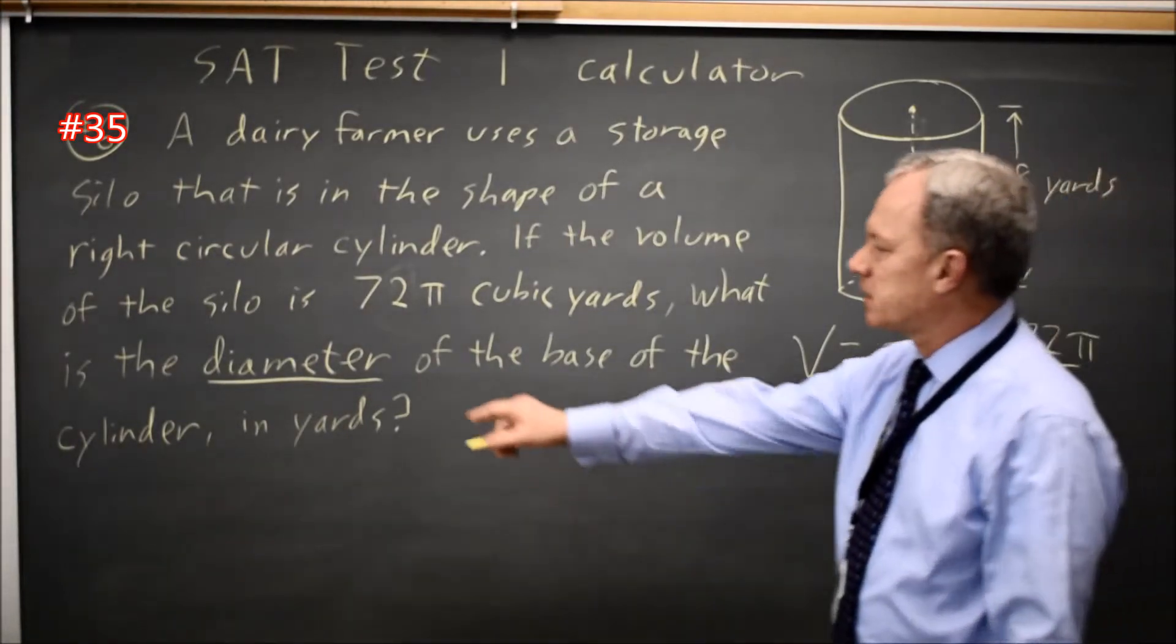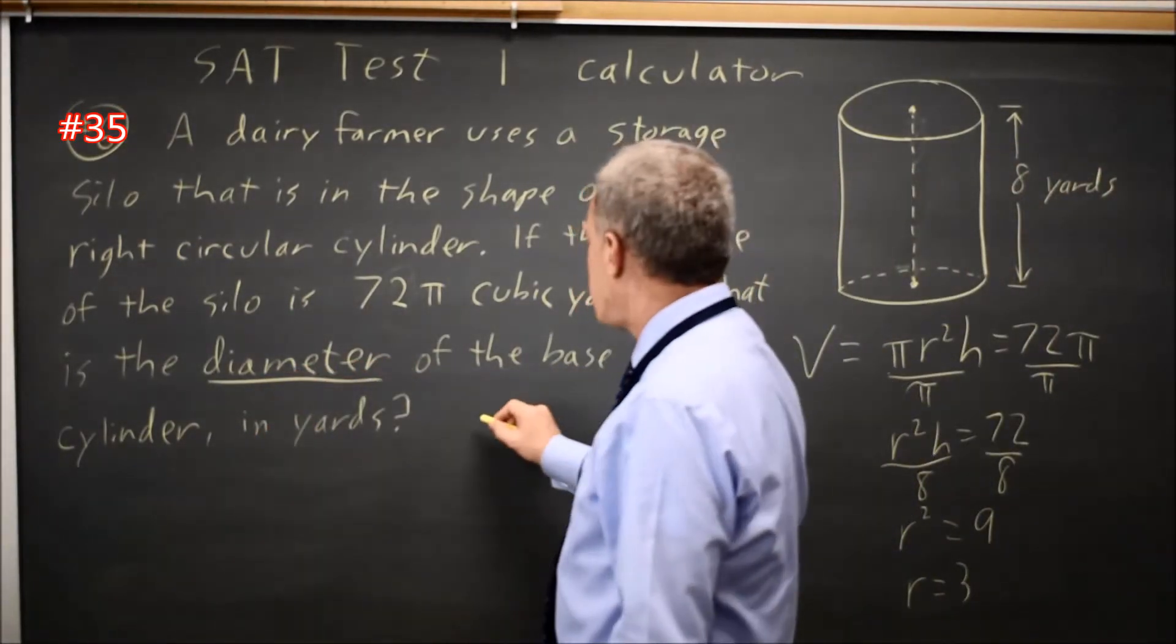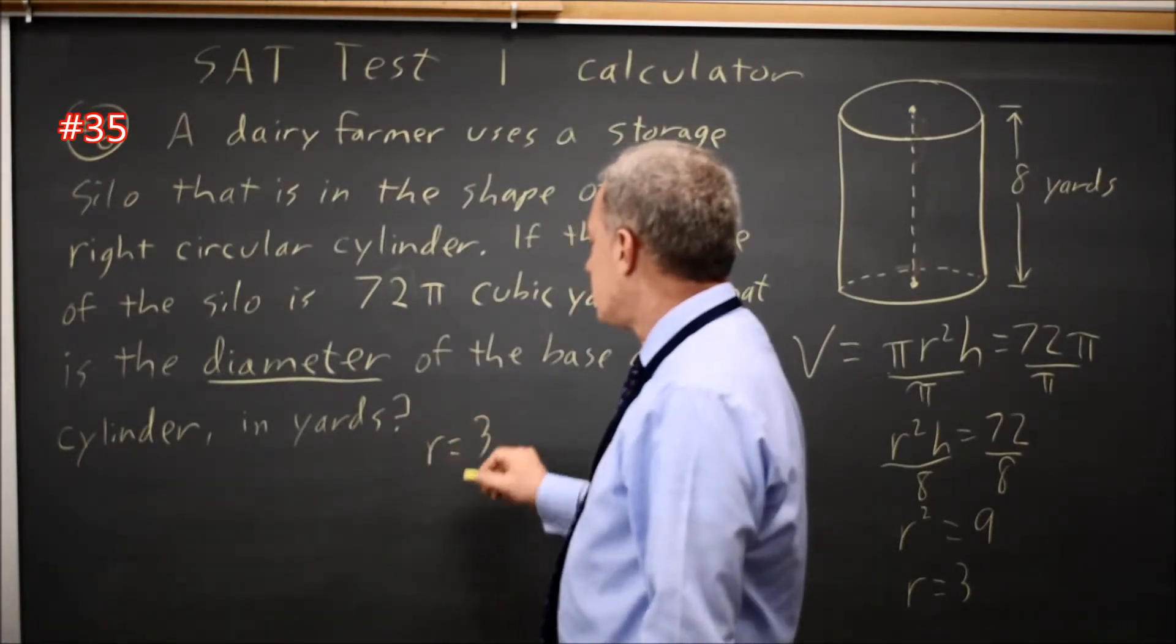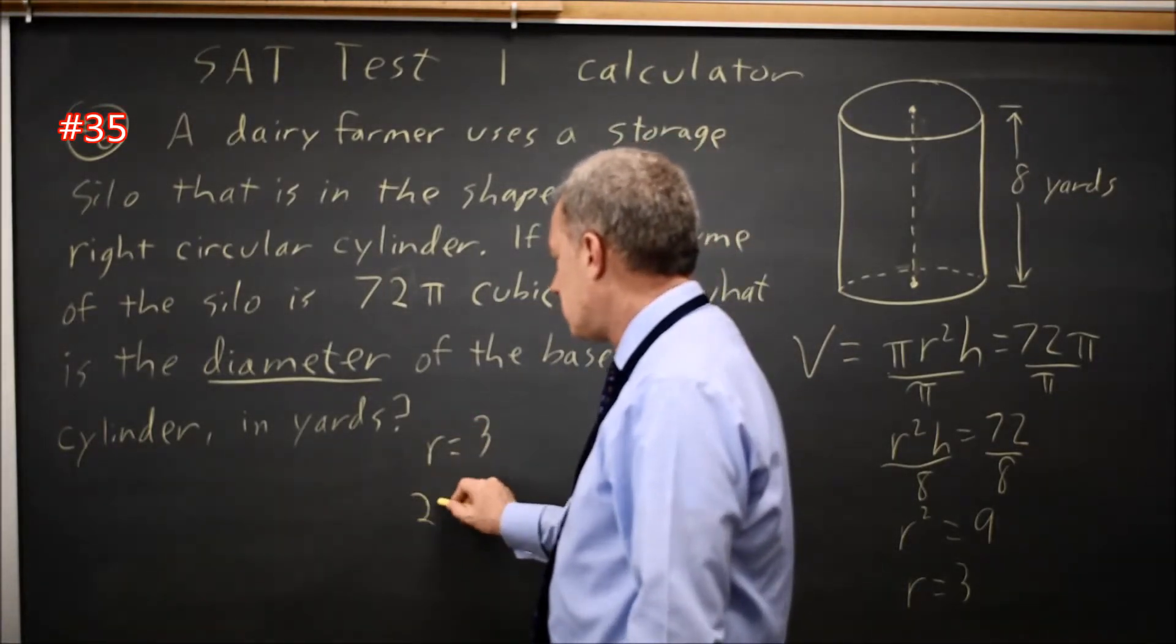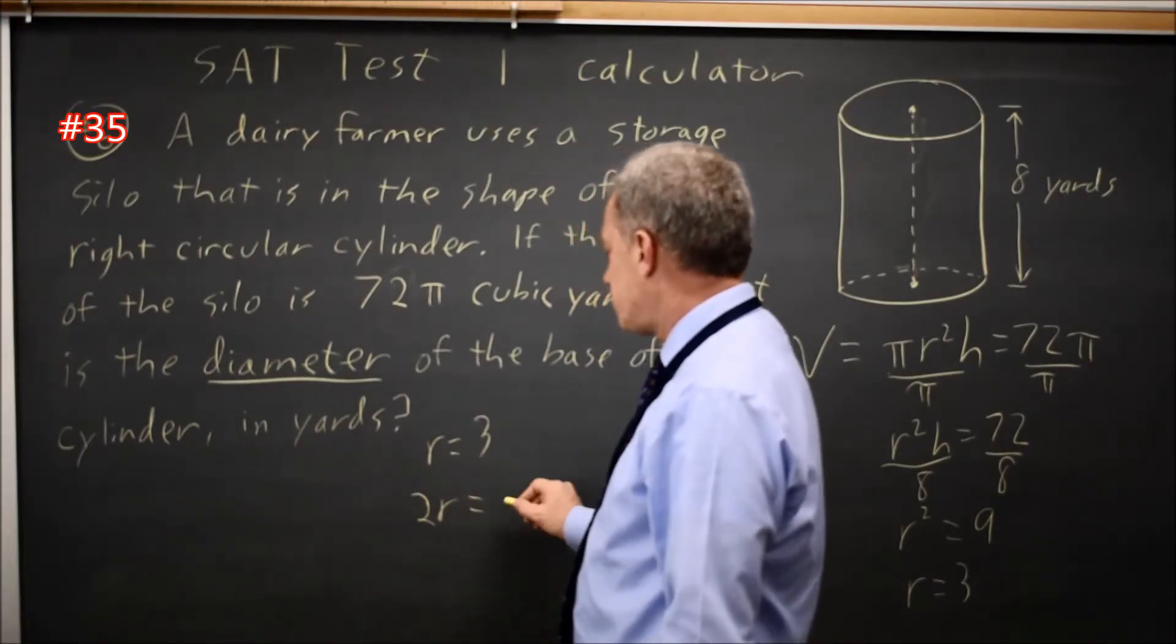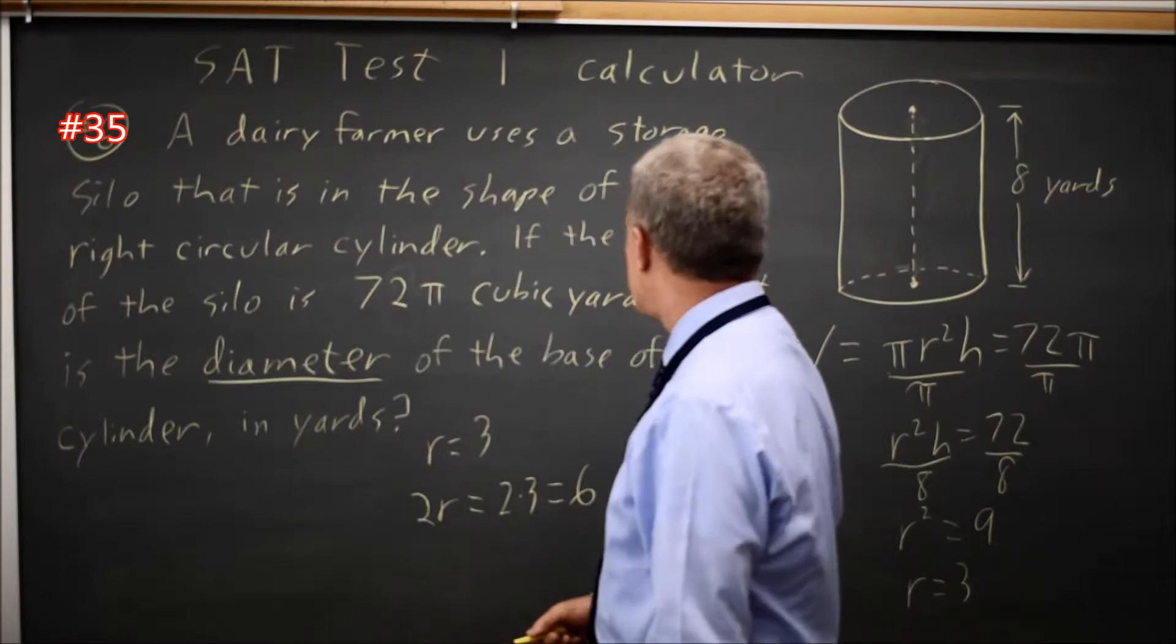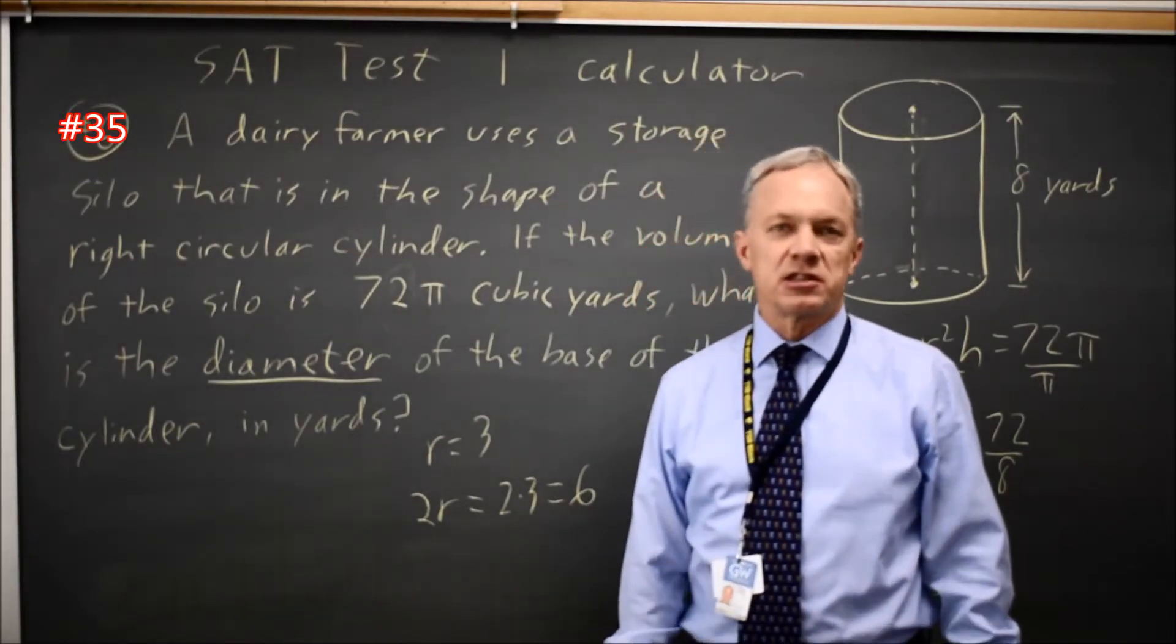And even after seeing that diameter was underlined, many of us will write 3 because that is the radius. But they're looking for 2r, twice the radius as the diameter, and that's 2 times 3 equals 6. The diameter of the base of the cylinder in yards is 6 yards.